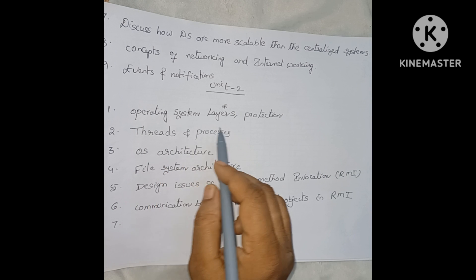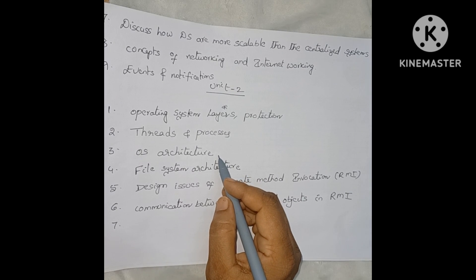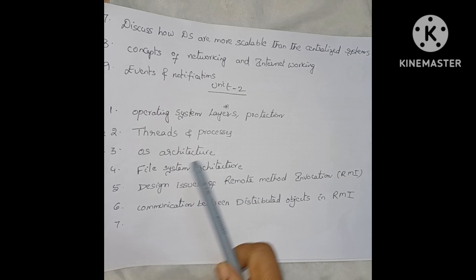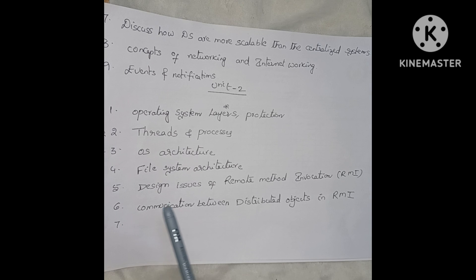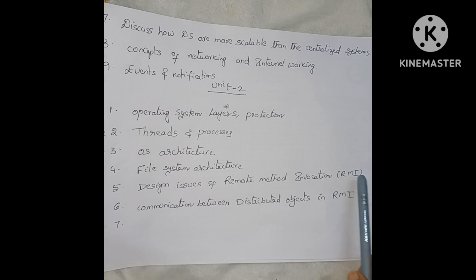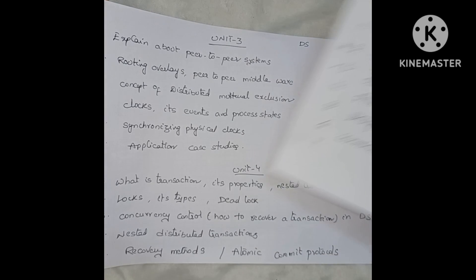Threads and multi-threading concepts are key. Next is OS architecture — also a very important question. Then file system architecture. Next is remote method invocation (RMI): explain the design issues of RMI and explain the communication between distributed objects in RMI. This is also an important question.